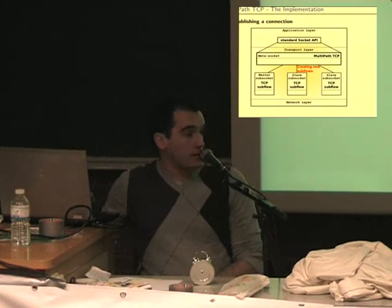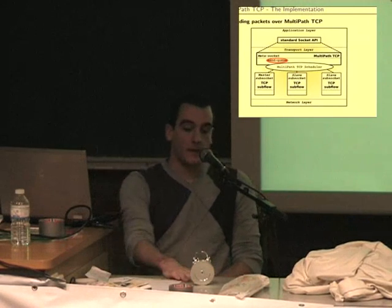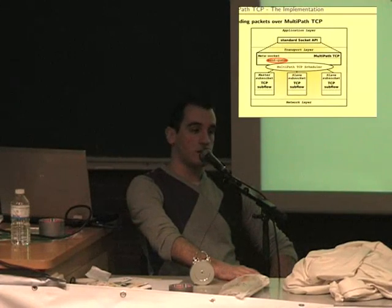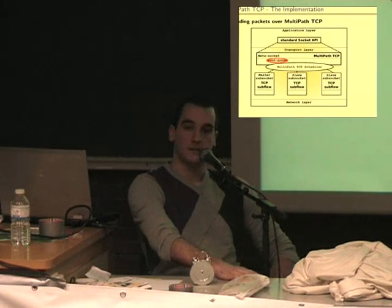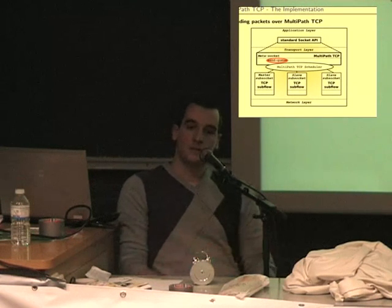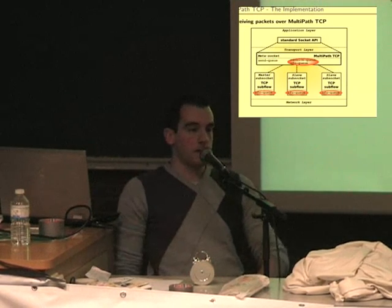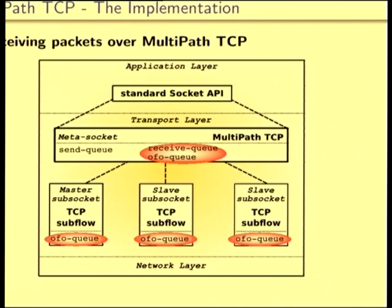When we have established the socket and the application wants to send data, it calls the send or write system call through the standard socket API, and all the data stream is pushed into the send queue. From that moment on, the meta socket with the Multipath TCP scheduler distributes the traffic over the different subflows. At reception, we maintain different queues — notably the out-of-order queue per subflow — which are necessary if you have losses or reordering in the network, so you can still deliver the same reliable byte stream.